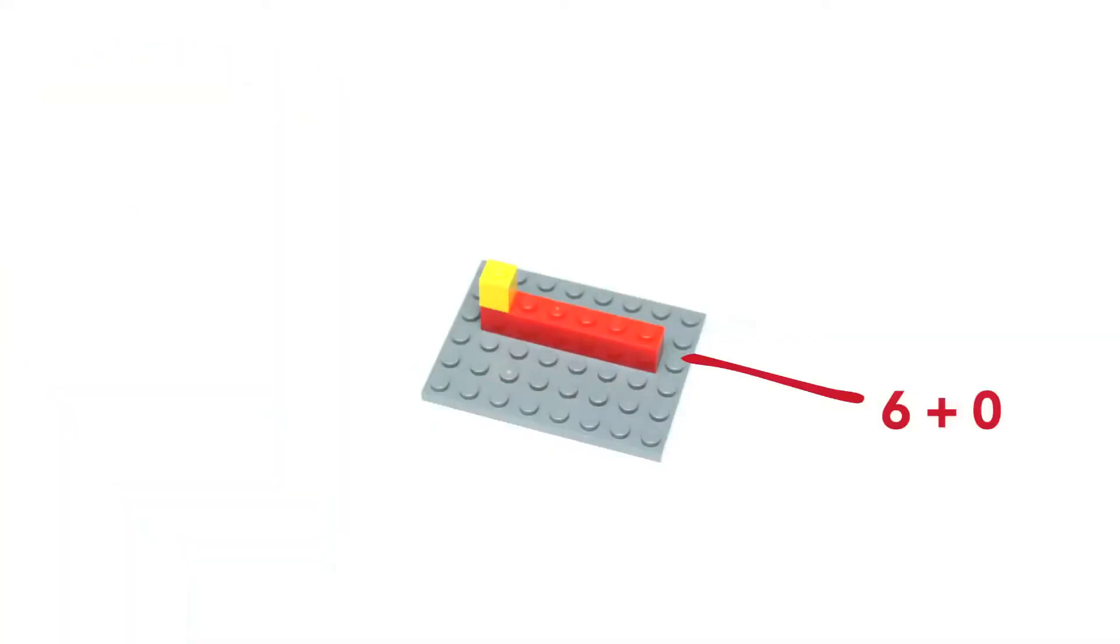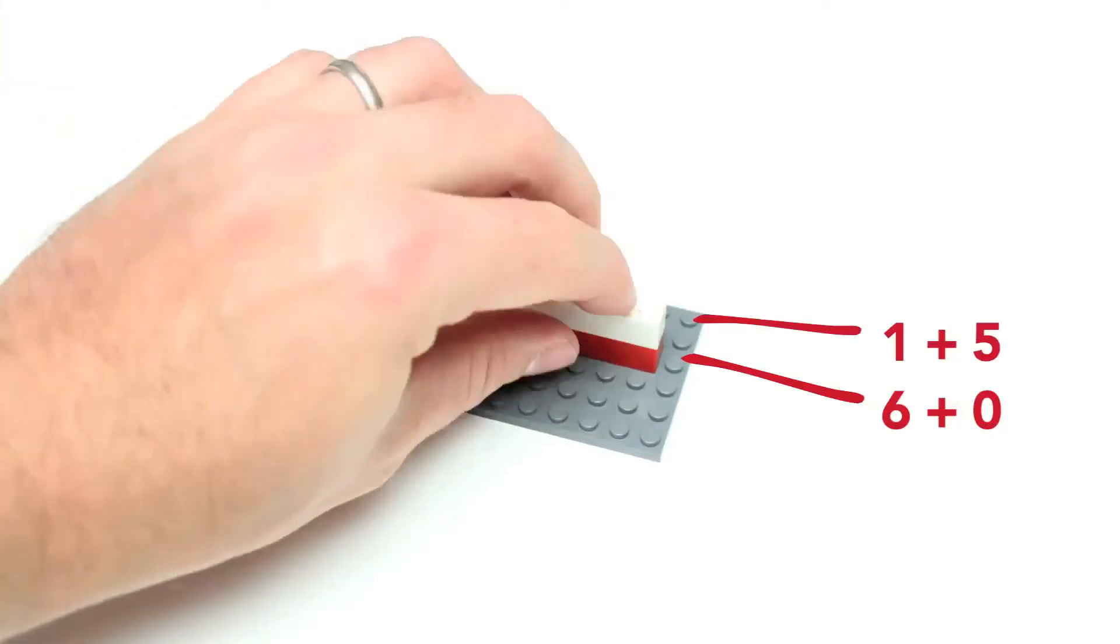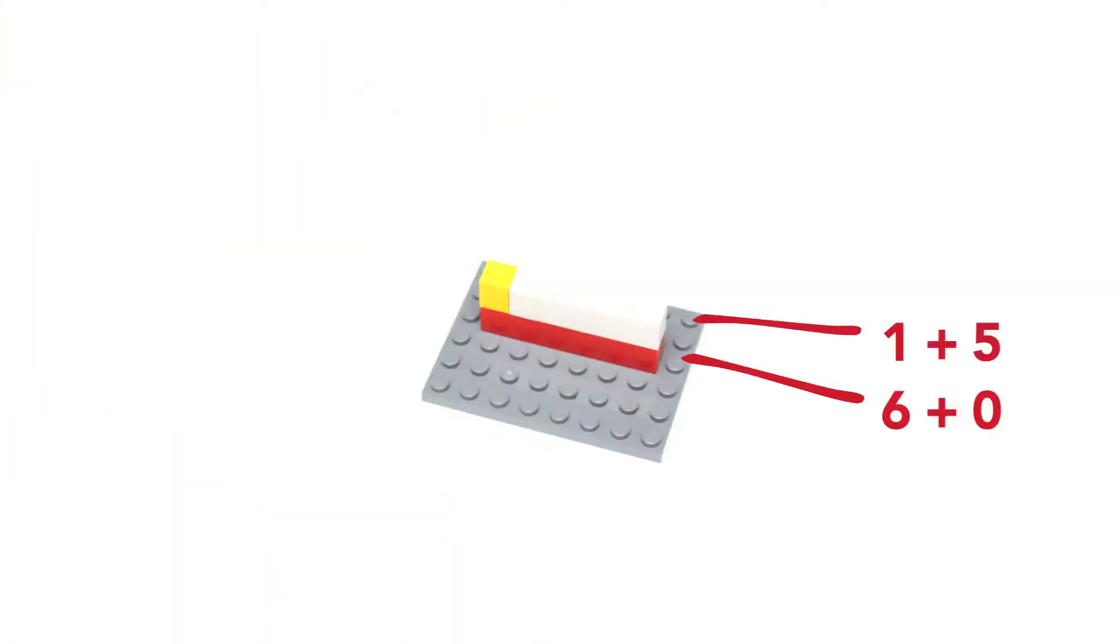Begin with 1 plus 5. Use two different colors of bricks for the two addends. Stack the bricks on top of the 1 by 6 brick to represent the two addends that make up the sum.